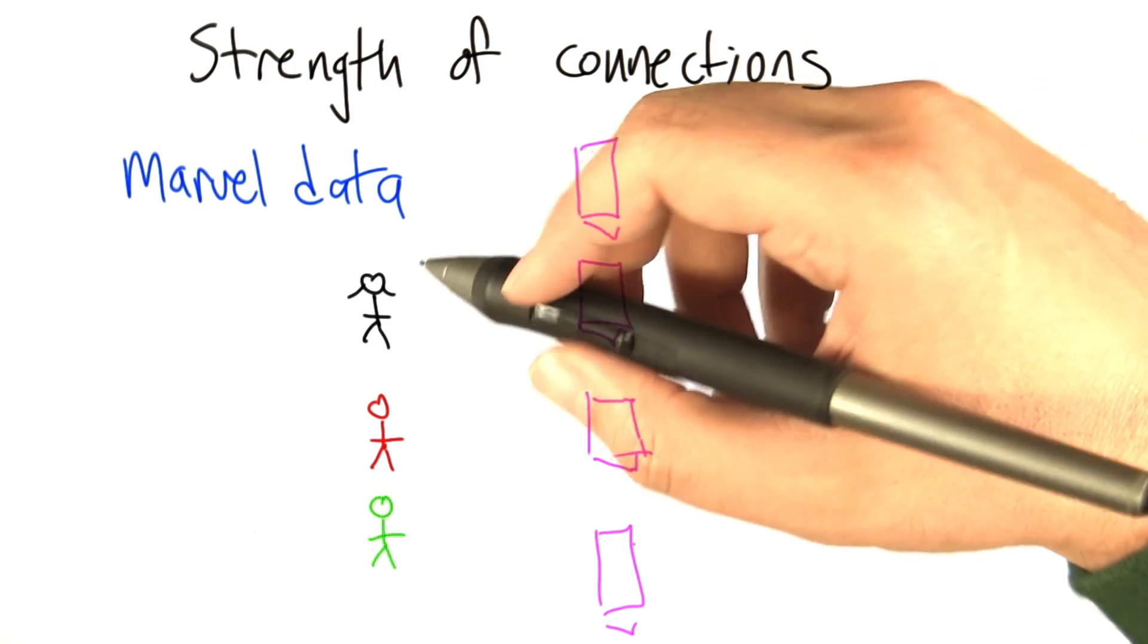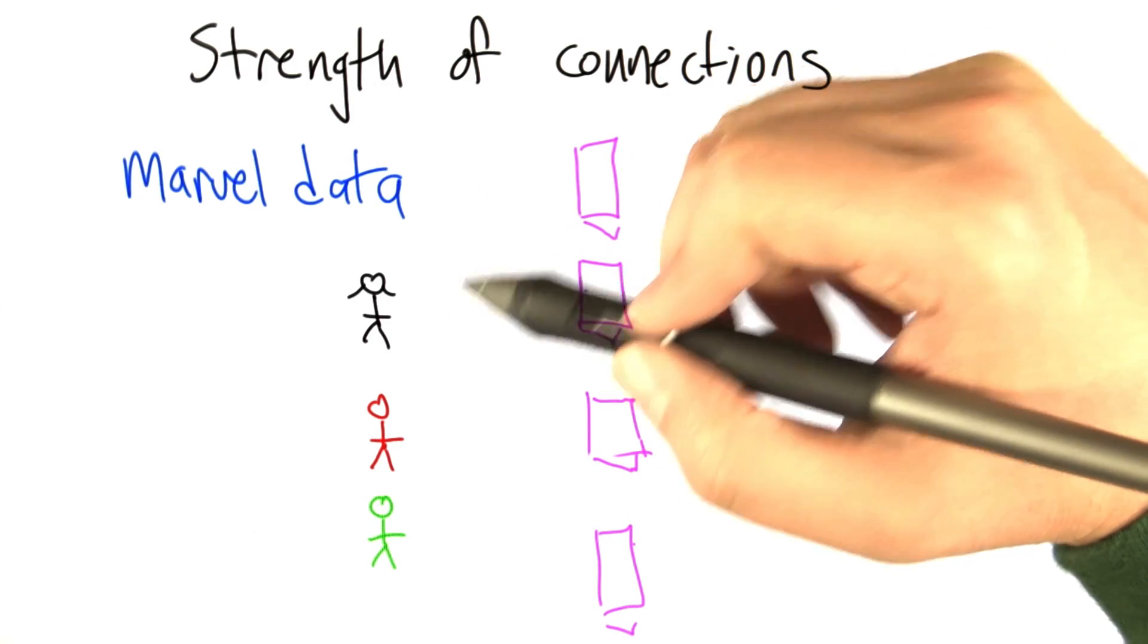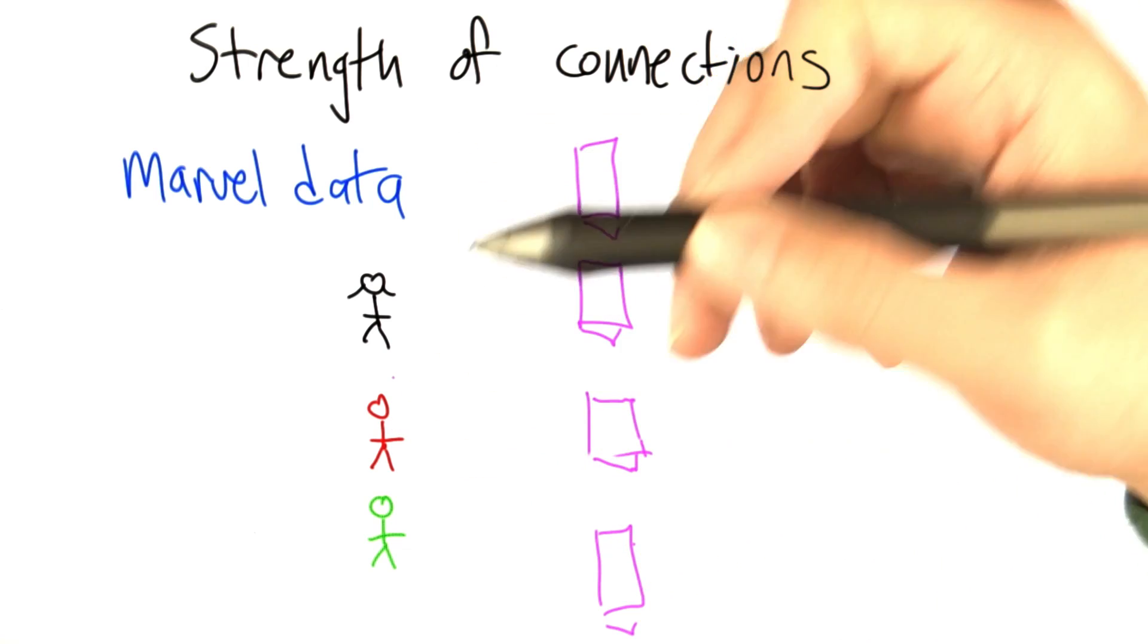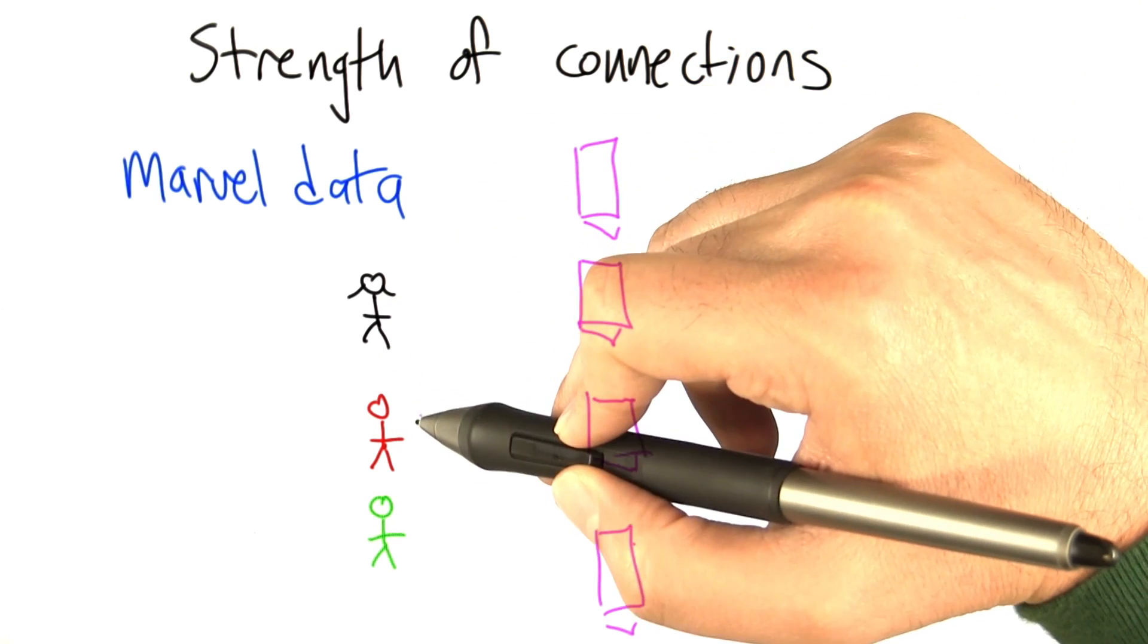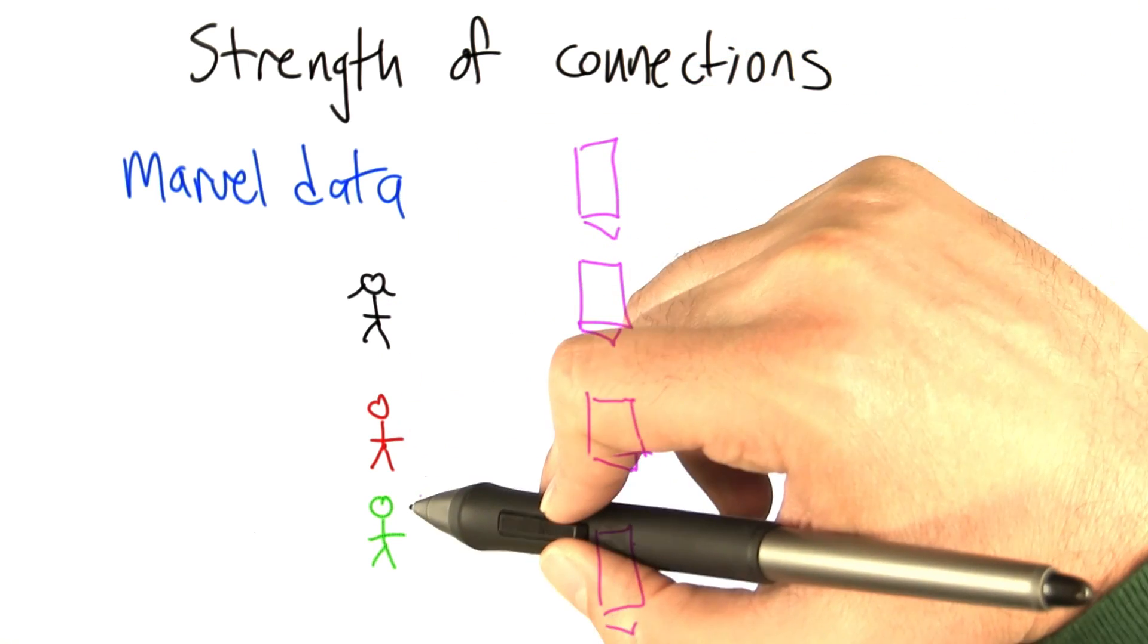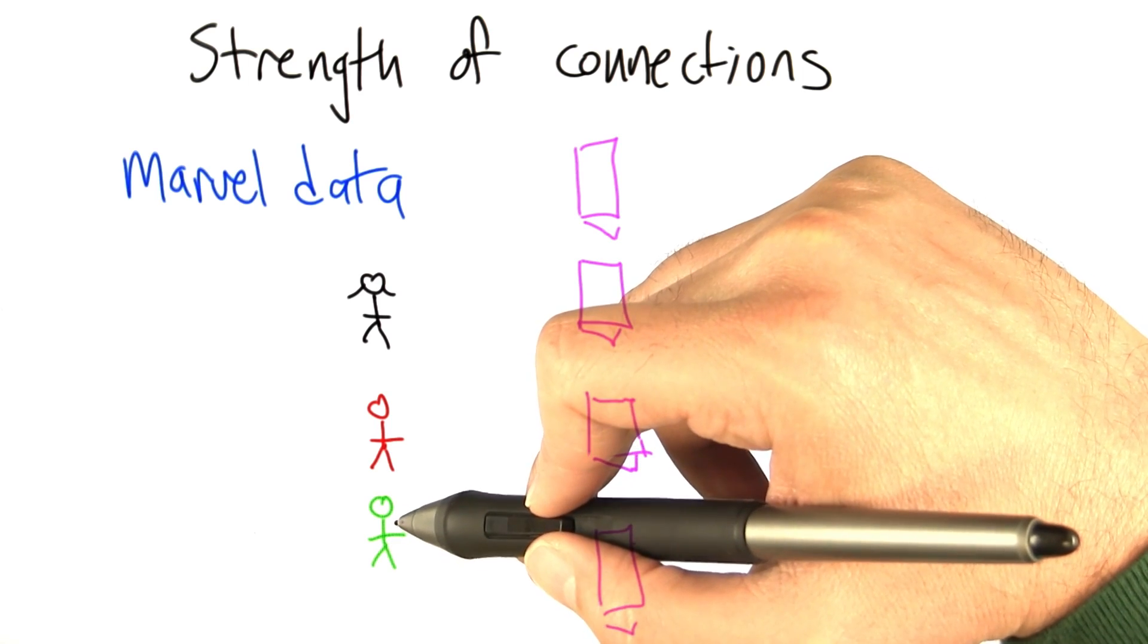To motivate the algorithms that we're going to talk about in this unit, let's go back to the Marvel data again. Here's three superheroes. We're going to call them Black Widow, Spider-Man, and the Hulk.